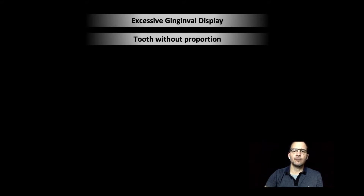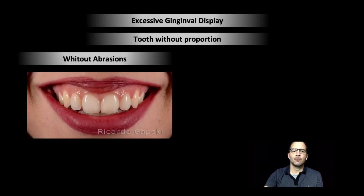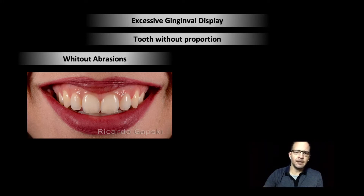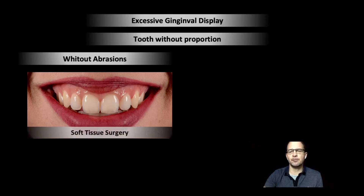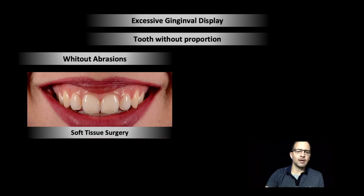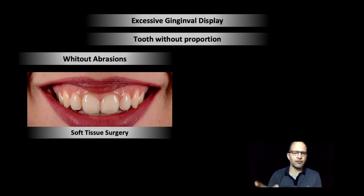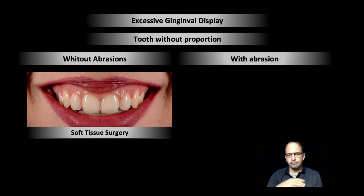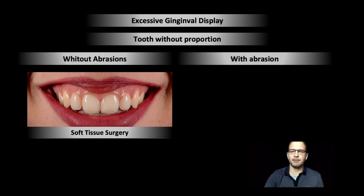Now, if you have an excessive digital display, a tooth without proportion, with abrasions — without abrasion, I'm sorry — then the tooth proportional gauge is going to be awesome. So you can do a soft tissue surgery, you can do a removal of your bone, and it's a classic case that we're going to show.